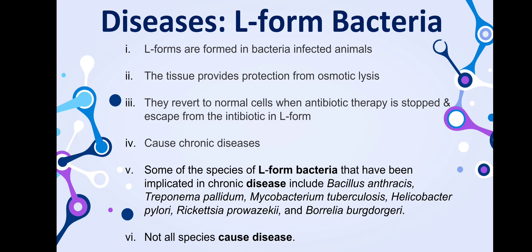L-forms are mainly found in animals infected by bacteria, where the host tissue provides protection from osmotic lysis. When a doctor prescribes antibiotics against a bacterial disease, the bacteria can switch to the L-form state; since the antibiotics target the cell wall, L-forms escape treatment. When antibiotic therapy stops, they revert to the walled form, causing chronic disease. Species of L-form bacteria implicated in chronic disease include Bacillus anthracis, Treponema pallidum, Mycobacterium tuberculosis, Helicobacter pylori, Rickettsia, and Borrelia burgdorferi. Notably, not all L-form bacteria actually cause disease.